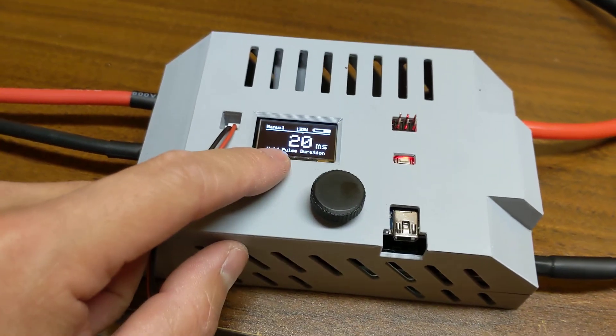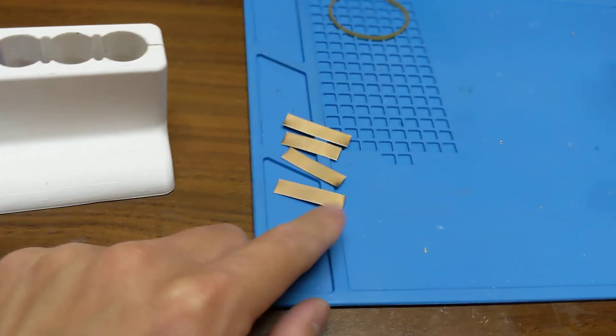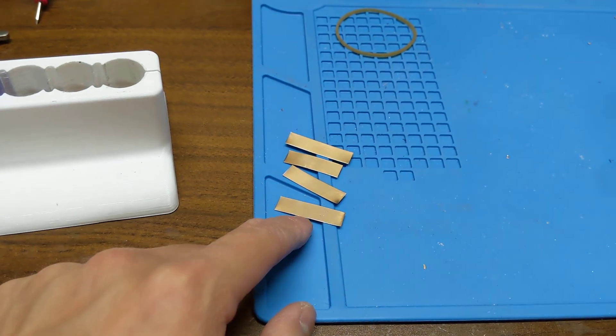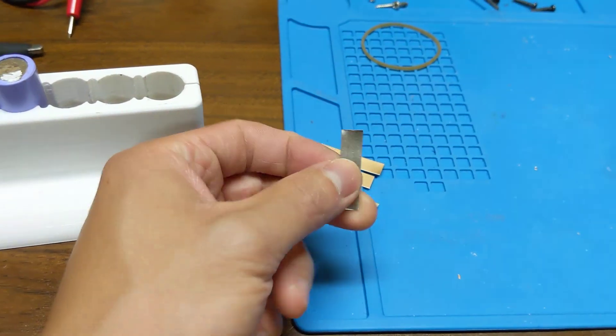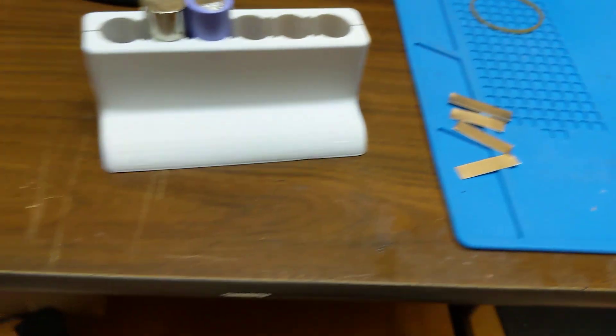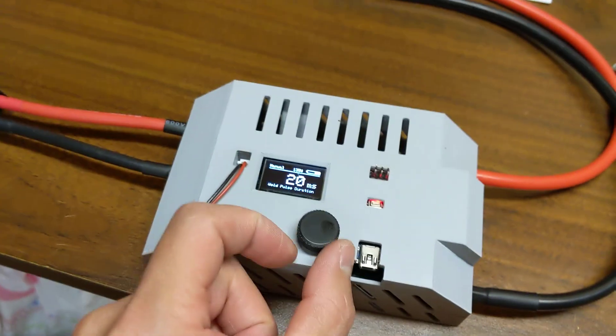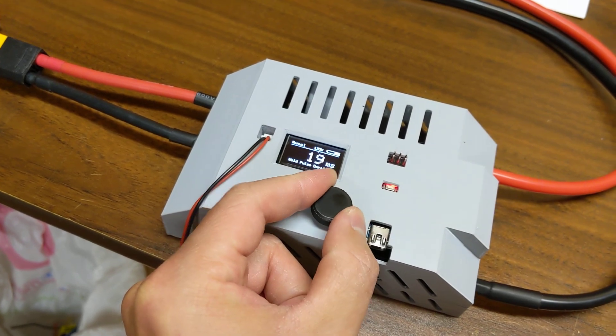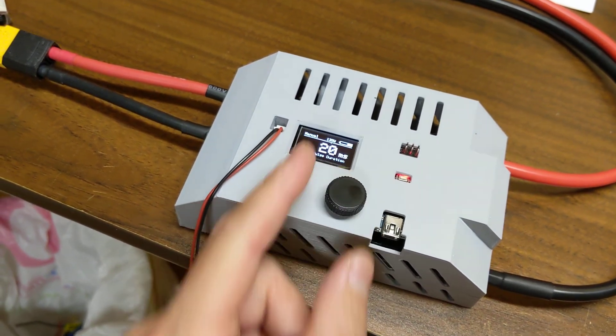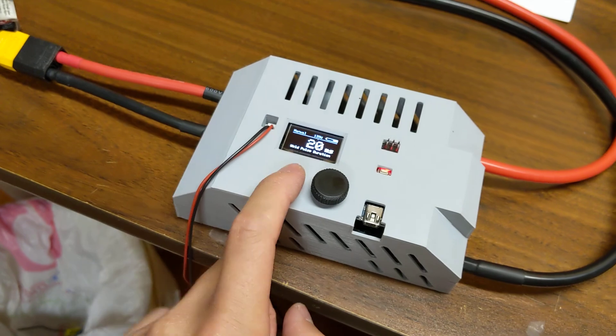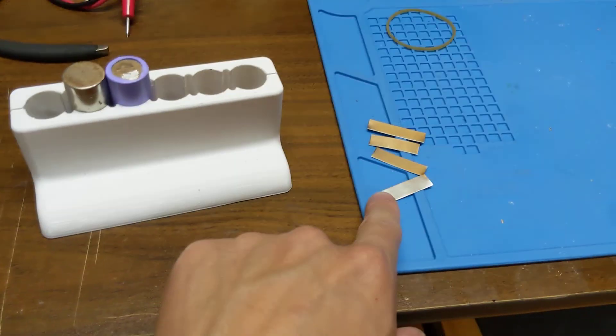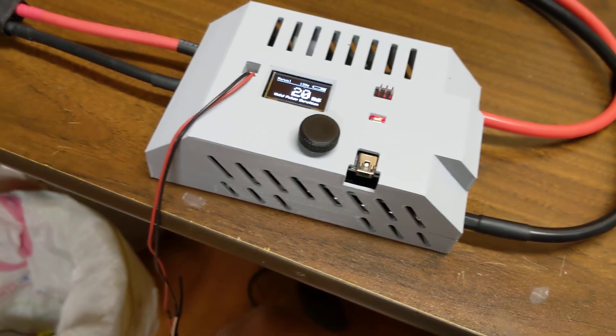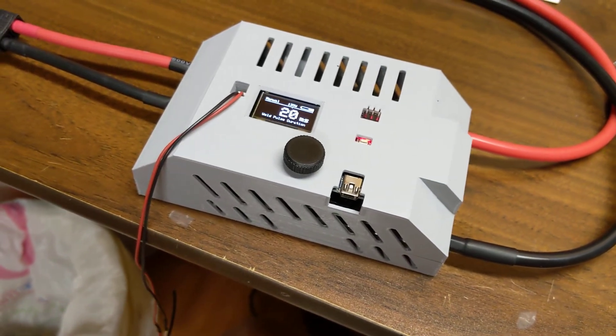I like to set this thing at 20ms with my 0.2mm thick pure nickel strip at 8mm wide. Operation is fairly easy to use. There's a really good assembly guide and guide on how to use it. Rule of thumb is 17ms is fine for 0.2. I give it a little bit more juice because I've been finding this works real well and it doesn't blow through anything at all.